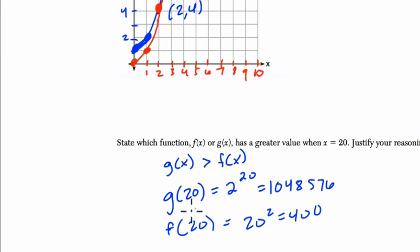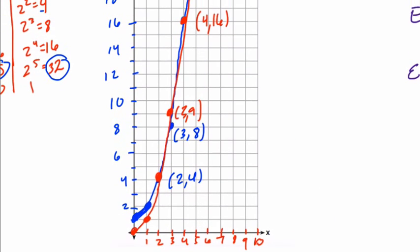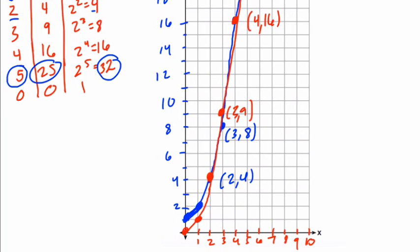You can see that g of 20 is way larger. Even though on our graph here, we can't really tell which one's which. Sorry about that. They kind of cut us off there in the interval. We can see that g of x is actually larger in the end.